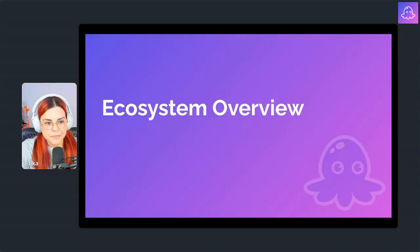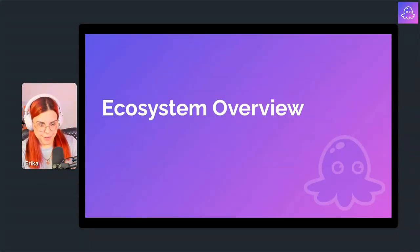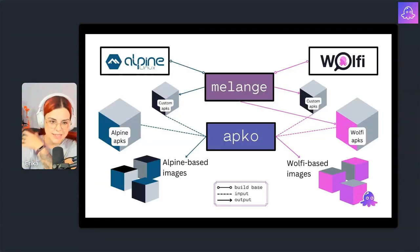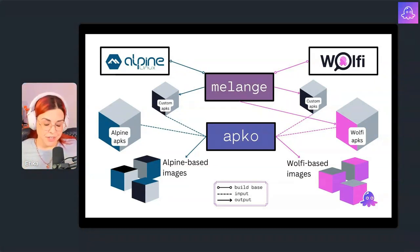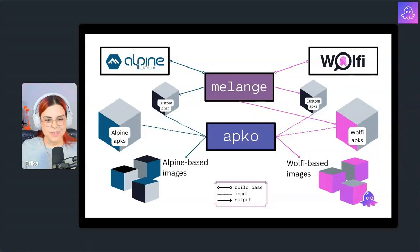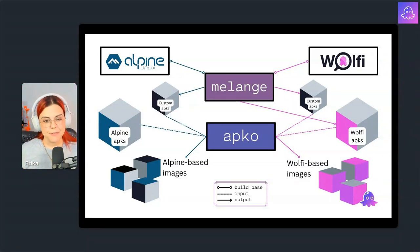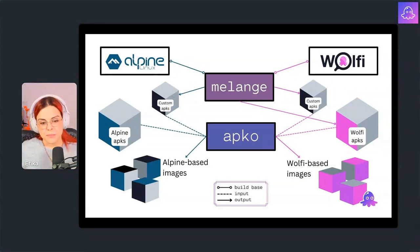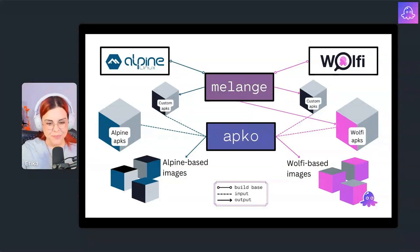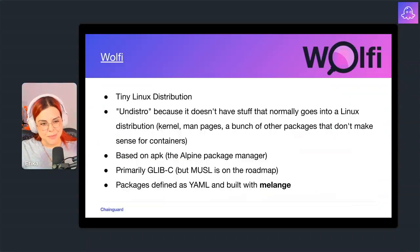I'll start with an ecosystem overview. This image has some of the elements I'm going to be talking about today, and I'll explain a little bit about each of these — this is just an initial look. You will see this image again in a moment. We have Melange, we have APKO, and then we have Wolfi and Alpine as distributions that can be used with these tools, and then we have the images generated with those tools.